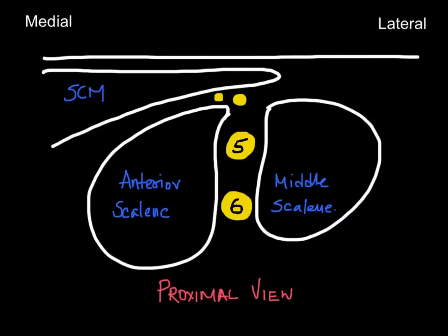When we move the probe a bit more proximally, we find that the bulk of the interscalene muscles becomes a bit smaller and usually only two nerve roots, C5 and C6, are visible in this proximal view. The phrenic nerve or the accessory phrenic nerve, as shown in this representation, lies very near to the C5 nerve root. Therefore injecting at this particular plane means they are more or less bound to be involved.